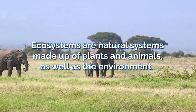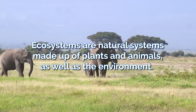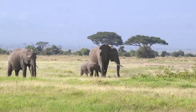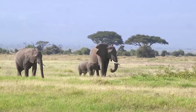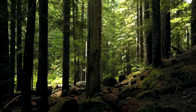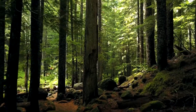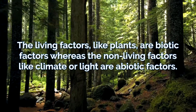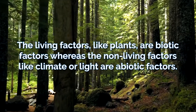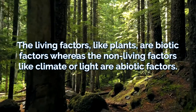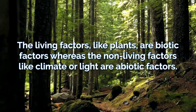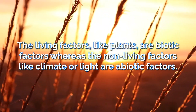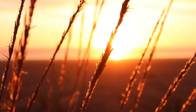Ecosystems are natural systems made up of plants and animals as well as the environment. These systems are made up of living and non-living factors that interact with each other. The living factors such as plants are known as biotic factors, whereas the non-living factors such as climate or light are known as abiotic.